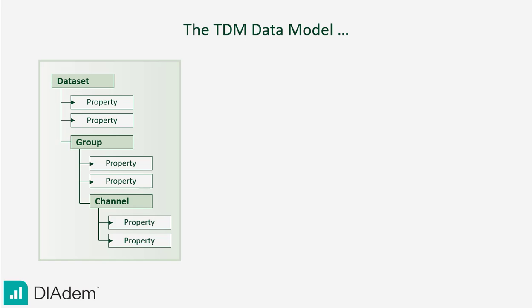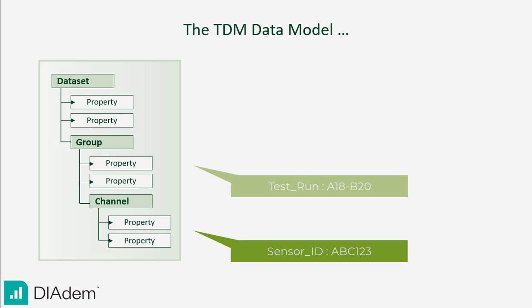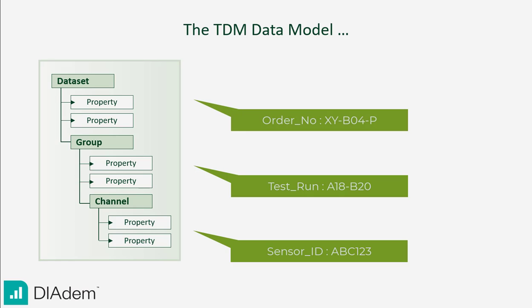What is important though is that these properties can be complemented with custom descriptive properties. A channel could thus contain the unique sensor ID and the calibration date of the sensor, or on file level, you could save the test or order number.